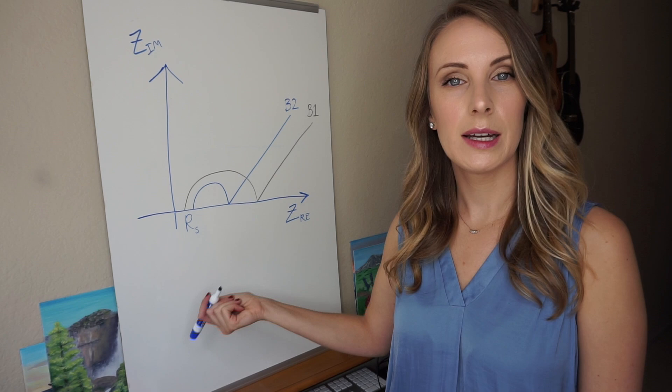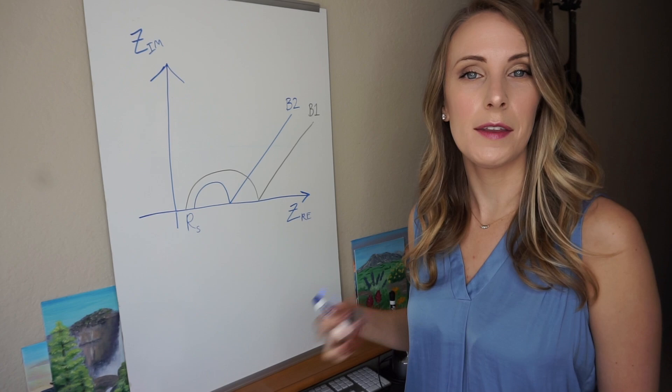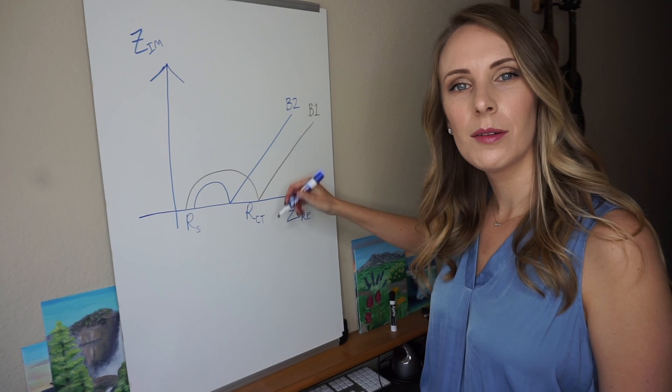This can be related to transport properties of your electrolyte. And then the other key feature of this is where this semicircle crosses the x-axis again. This is called the charge transfer resistance, R sub ct.